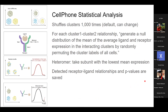The statistical analysis is based on shuffling clusters 1,000 times — that's the default, and you can change it. For each cluster-to-cluster relationship — with three clusters there would be six combinations because it takes into account self-to-self, and cluster two to cluster one would be different from cluster one to cluster two, so it's directional.